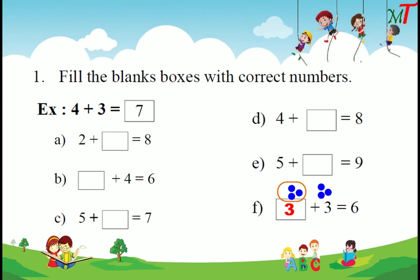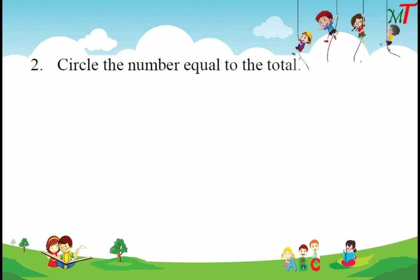Next activity: circle the number equal to the total. For example, 2 plus 5 — the sum of 2 plus 5 is 7. So we circle the number 7 from the row.